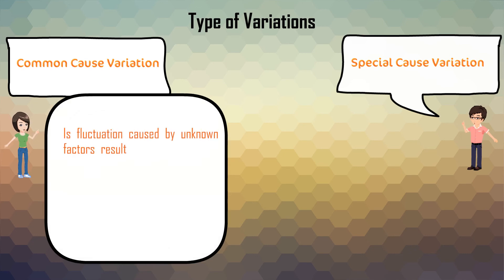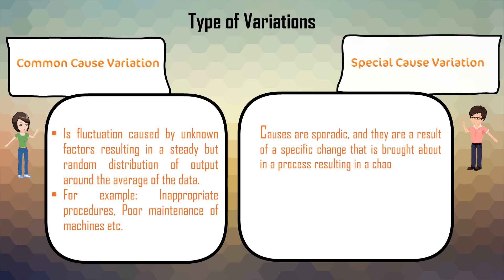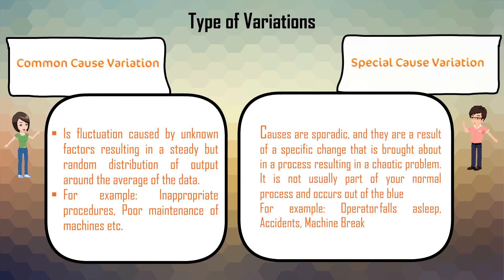If our data only consists of common cause variation, we should not be worried. Unlike special cause variation, which is not usually part of your normal process and occurs out of the blue.